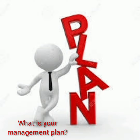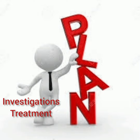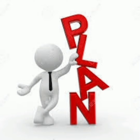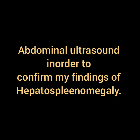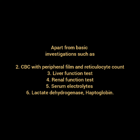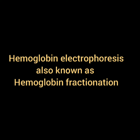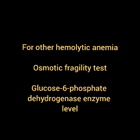If asked for the plan of management, state investigations and treatment. For investigations: I will advise abdominal ultrasound to confirm hepatosplenomegaly. Basic investigations include CBC with peripheral film and reticulocyte count, liver function tests, renal function tests, serum electrolytes, lactate dehydrogenase, and haptoglobin. I would advise hemoglobin electrophoresis — also known as hemoglobin fractionation — to confirm thalassemia. For other differentials, osmotic fragility test and G6PD level.